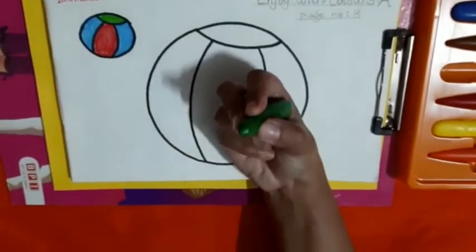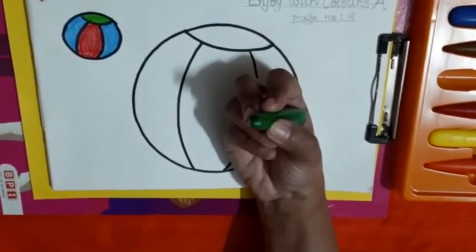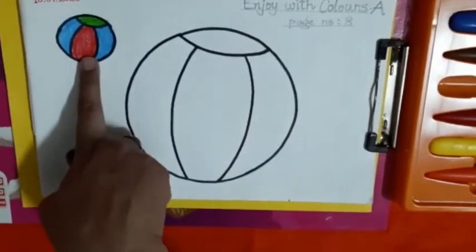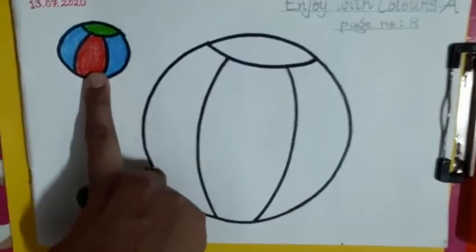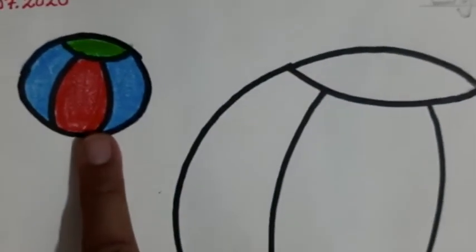Firstly, you will hold the crayon properly. Now, look at the small ball. Wow, it's so beautiful and colorful. In the same way, we are going to color the big ball.